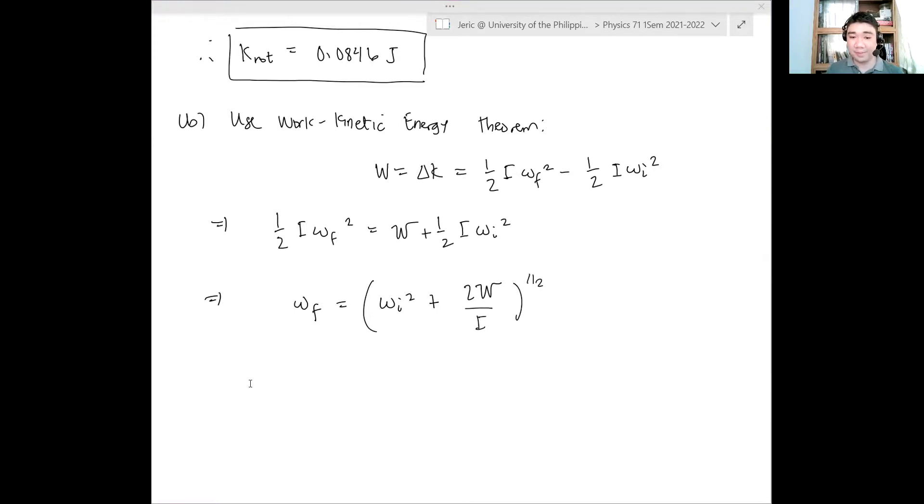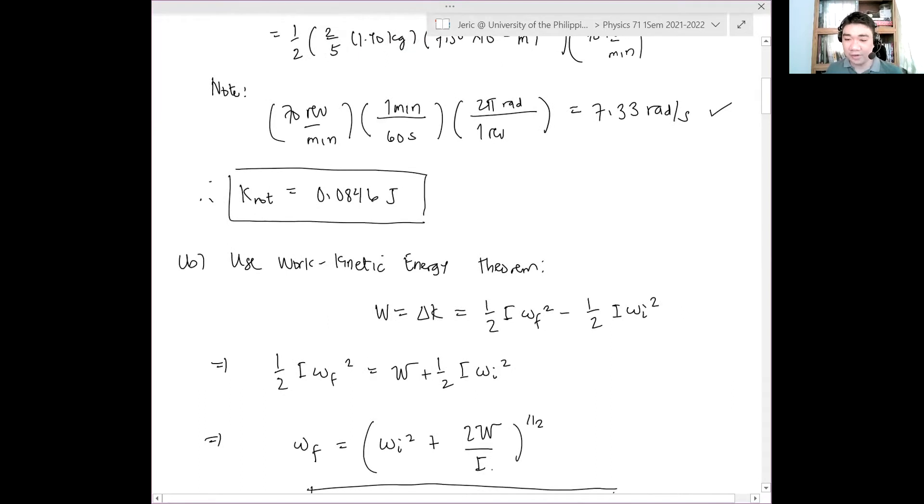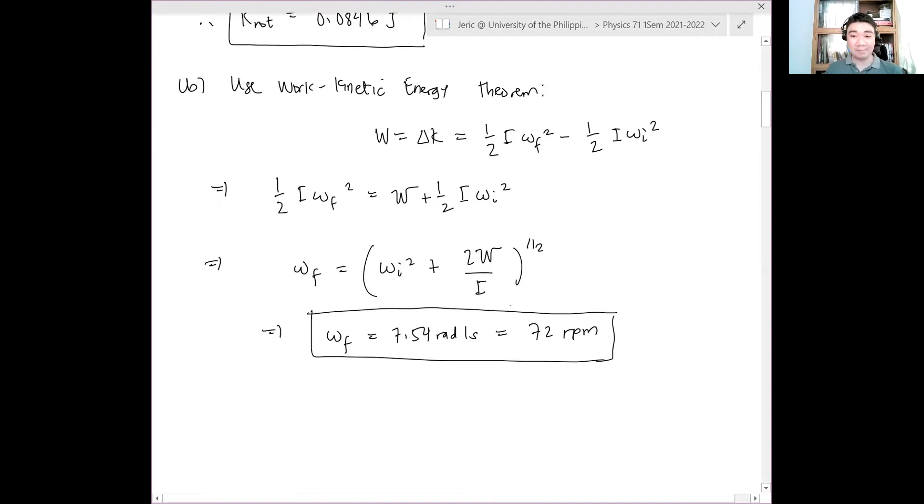So just plugging in our expressions, this will give us omega f—please verify this—is 7.54 radians per second, or about 72 rpm. That's the answer. What you do is plug in the omega i that we got, which is 7.33. And the moment of inertia is also given. And the work done is also given. That's 5 millijoules. So the point is you use your work kinetic energy theorem to determine the final angular velocity. Okay.